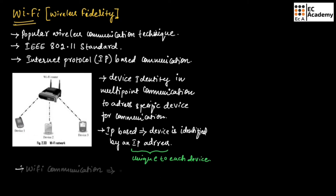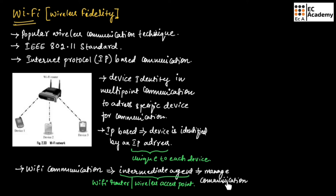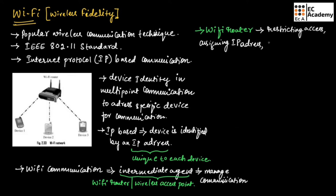Wi-Fi based communication requires an intermediate agent to manage the communication. These intermediate agents are the Wi-Fi router or wireless access point. The Wi-Fi router is responsible for restricting access to the network, assigning IP addresses to devices, and routing data packets to the intended device on the network.